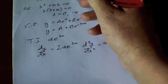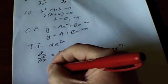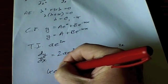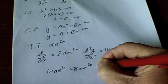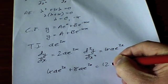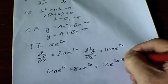Substitute these into my equation and I'm going to get 4Ae^(2x) plus 8Ae^(2x) equals 12e^(2x).